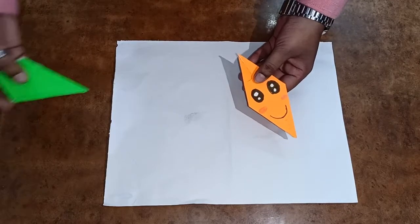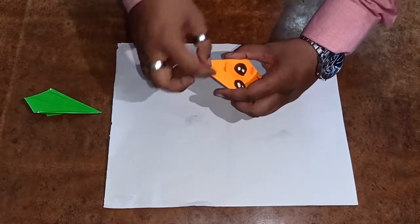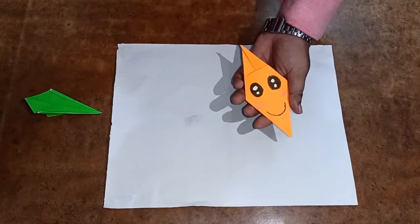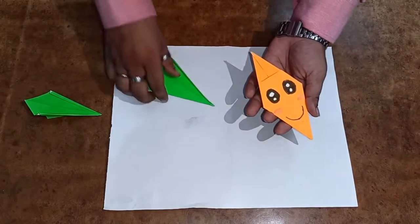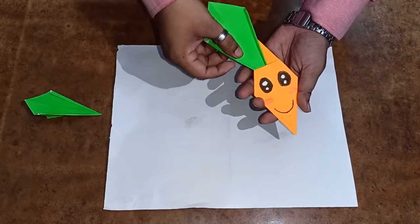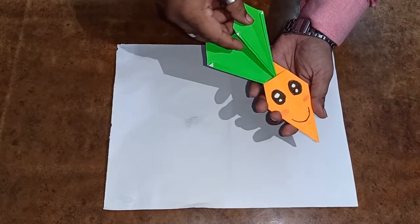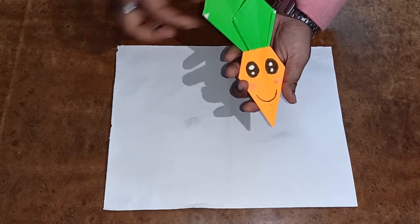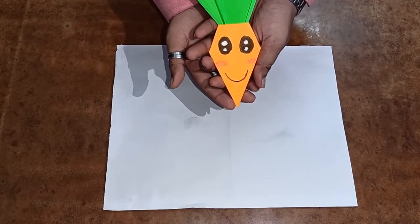Now, what we are going to do? Here, you can see there is a gap, a pocket like thing. You just have to take the leaves and you have to put it like this. Understood? Now, your carrot is complete.